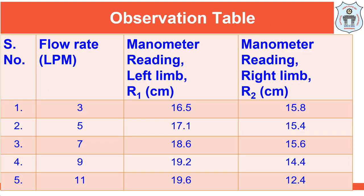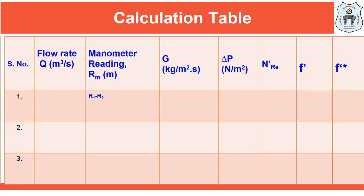Dear students, we have performed the experiment and collected the data. The obtained data shown on the screen includes the flow rate, the manometer reading in the left limb R1 in cm, and the manometer reading in the right limb R2 in cm. Using this data, students can calculate the pressure drop, perform the calculations as explained in the calculation table, complete the calculations, and submit the folder. If you have any doubts, you can contact us.